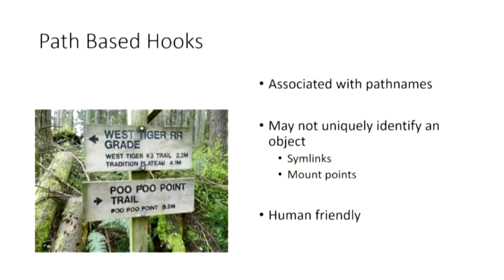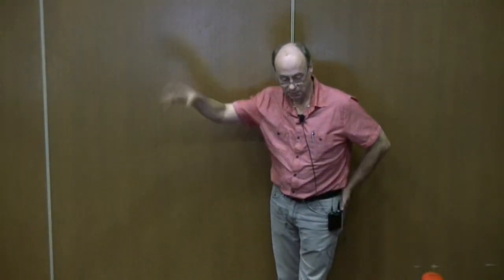We also have path-based hooks for people who say, 'I've got /etc/passwd — I don't care whether it's a file, a symlink, or a device. Anything called /etc/passwd, whether it's in a container, a weird mount place — I don't care. I'm going to associate my security policy with the path name.' Now this may not fully identify something as an object because you're going by the name, and there may not actually be anything associated with that name. We've got symlinks and mount points to worry about. But it's very human-friendly. We do have hooks where you can say 'if I found /etc/passwd, I can do something, make some kind of check on that.'